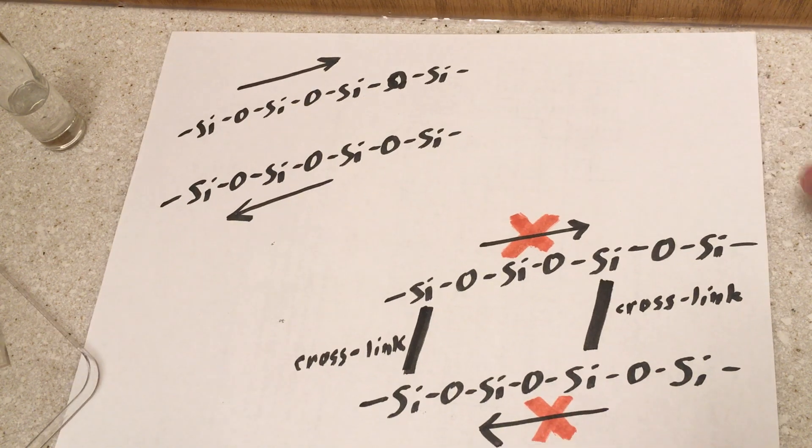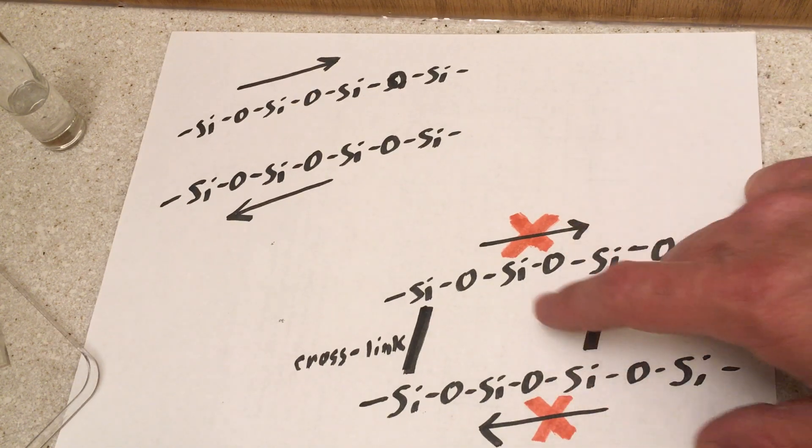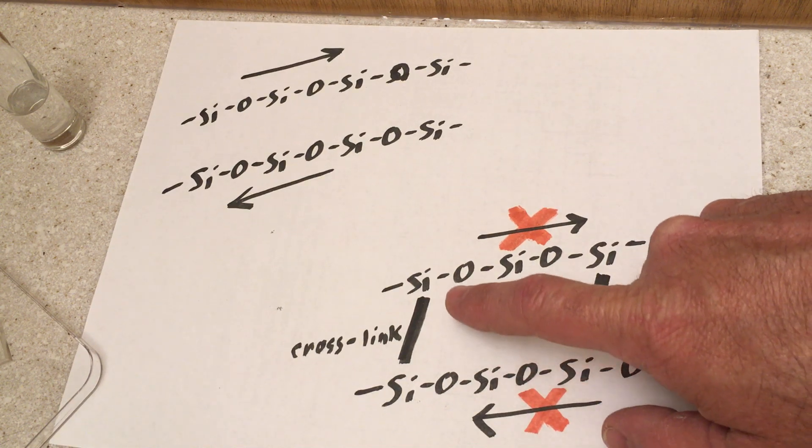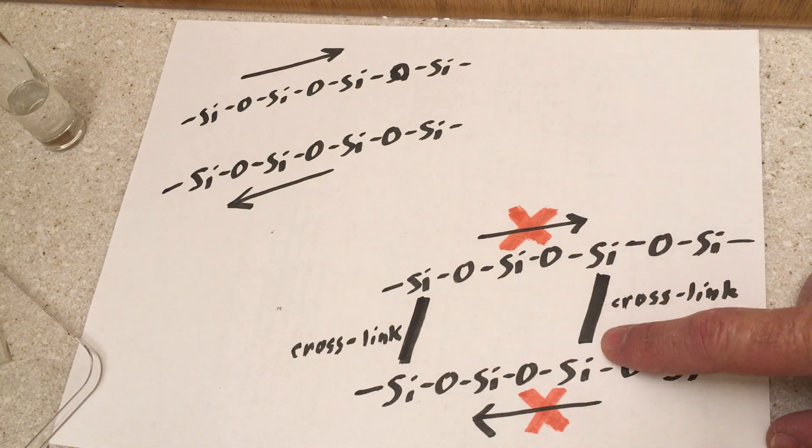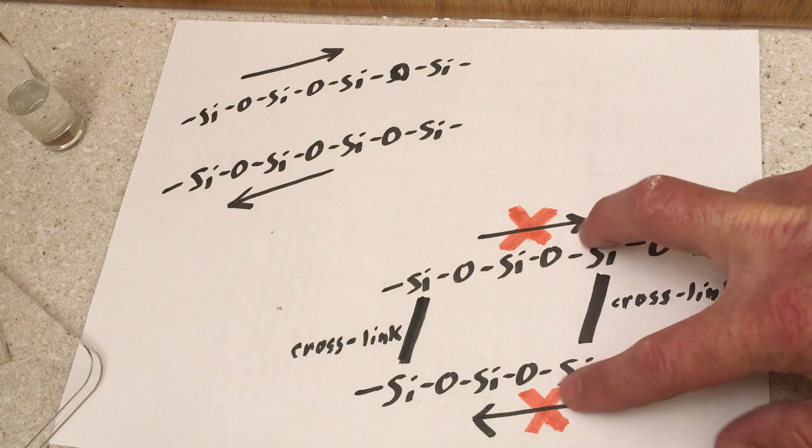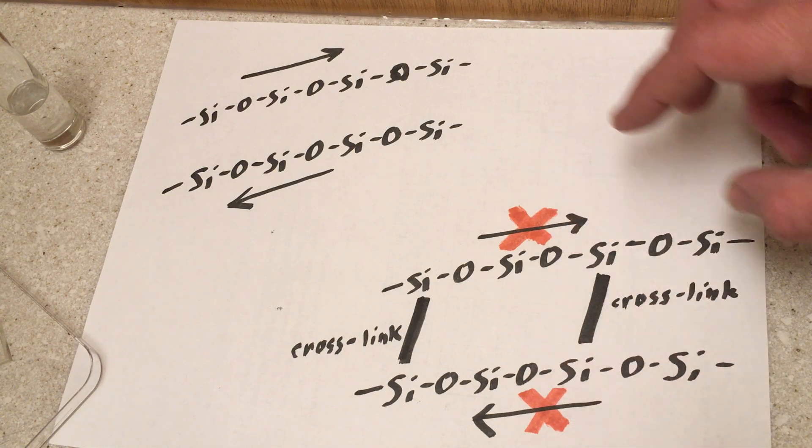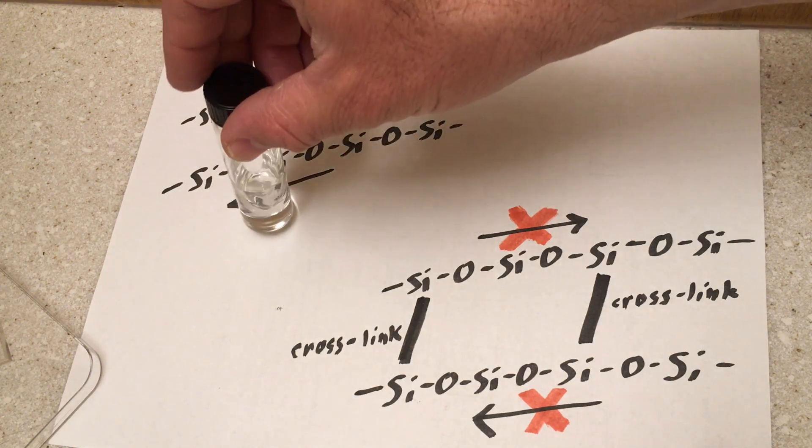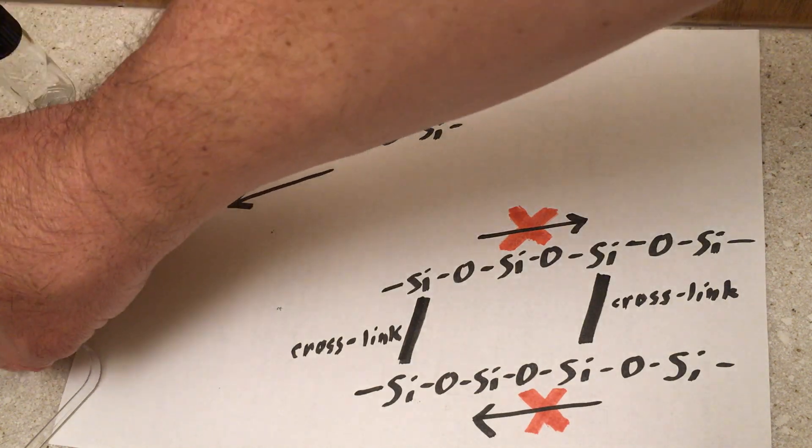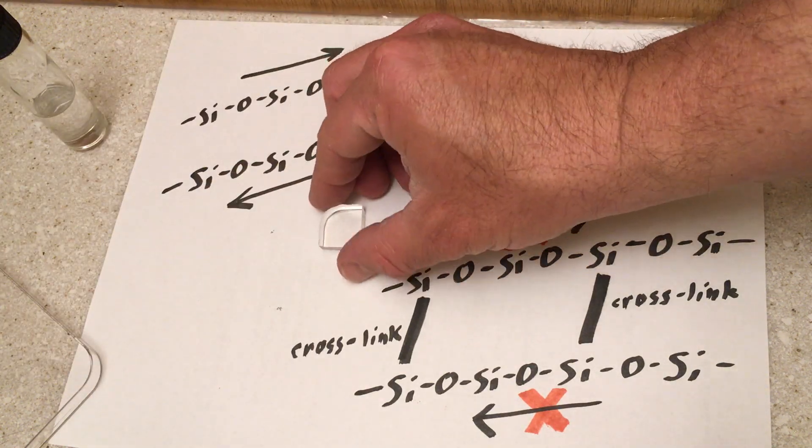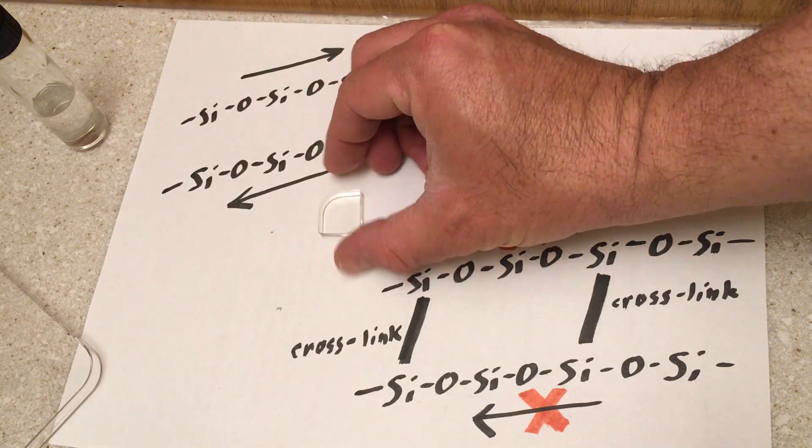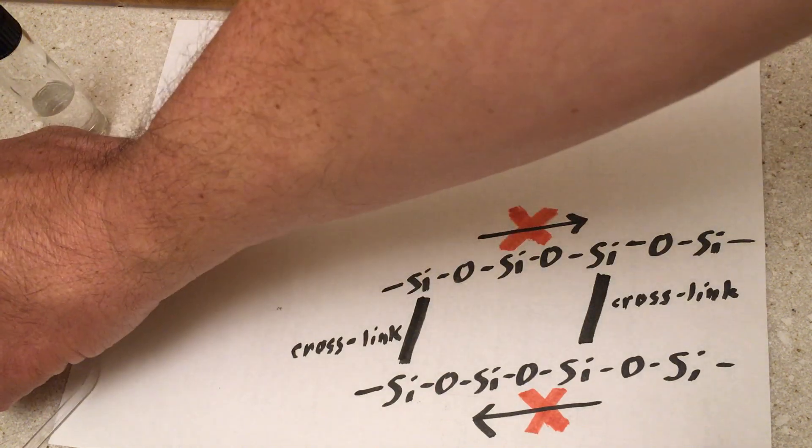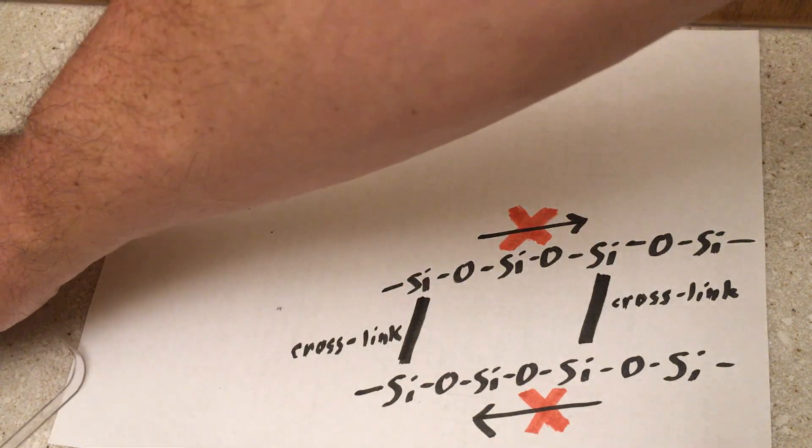Now if we can figure out how to link these chains together by structures called cross-links, what can happen is we can prevent those chains from sliding past each other. And if we were to take this viscous liquid and cross-link it, we get this rubbery solid material. And indeed that's how we actually did that.